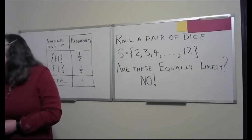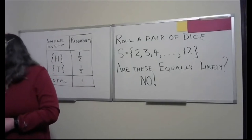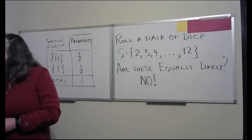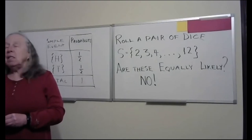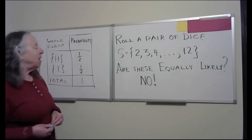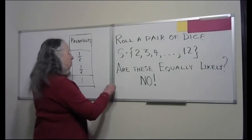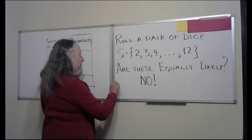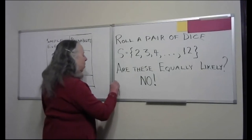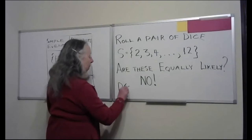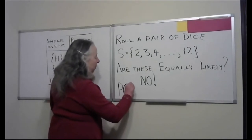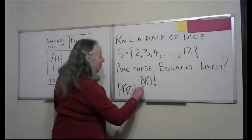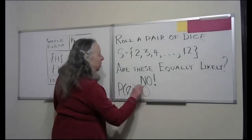We need to be a little careful: if we have the empty set — which is what Jim told us about — the probability of the empty set is always going to be zero.